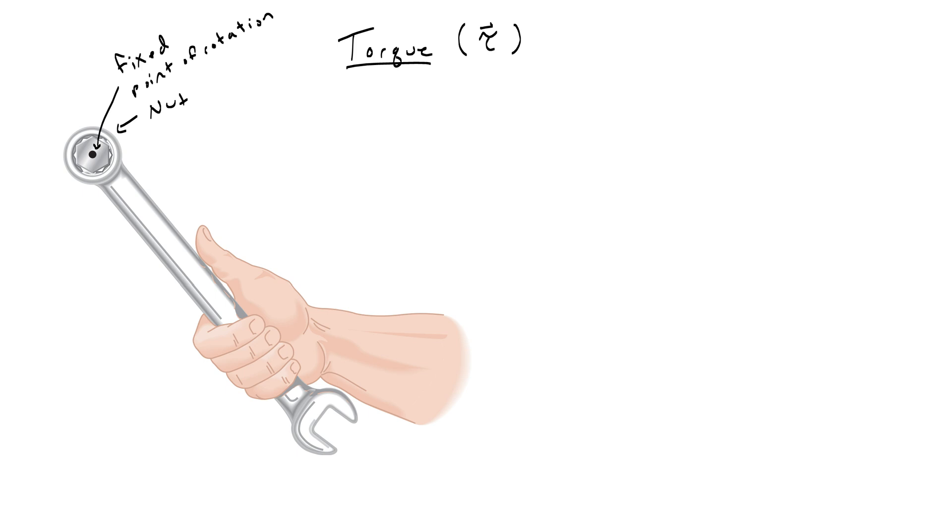There are two different vectors involved in this problem. The first is the force applied by the hand, which we're going to draw coming out of the point of application and directed along the arm. We'll call that F for the force.